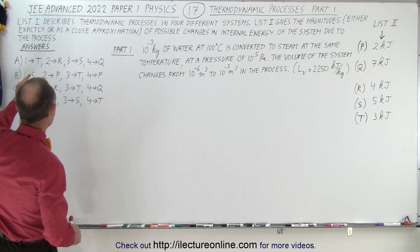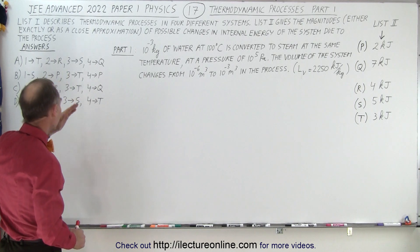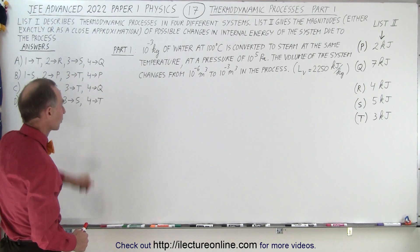For part 1, we can either have T, S, P, or Q. For part 2, it could be R or P. Part 3: S or T. And for part 4: Q, P, or T.